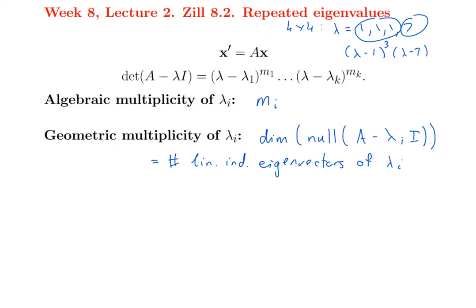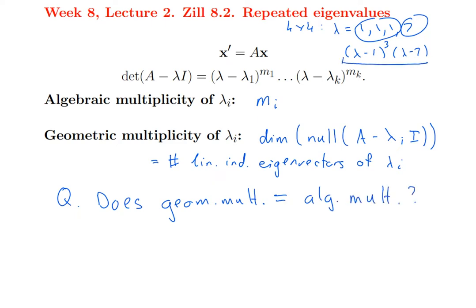When you have repeated eigenvalues it's very important to know the geometric multiplicity of those repeated eigenvalues, because you'll need to answer the key question: does the geometric multiplicity equal the algebraic multiplicity? In the case where an eigenvalue has algebraic multiplicity 3, you'd be asking: is the dimension of the null space of A minus lambda I equal to 3? Are there three linearly independent eigenvectors? The first case is when the geometric multiplicity does equal the algebraic multiplicity, and the other case is where it does not — where it's smaller, where you essentially don't have enough eigenvectors.